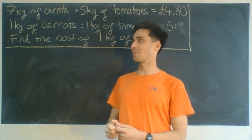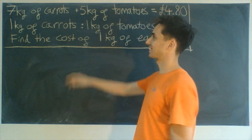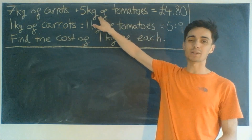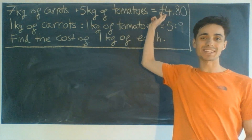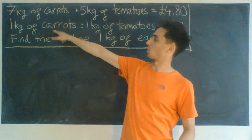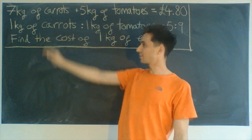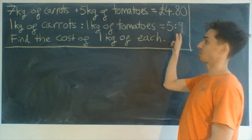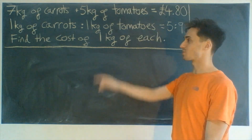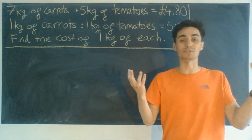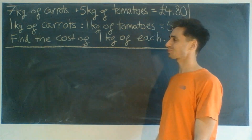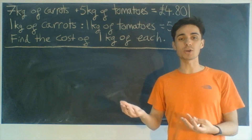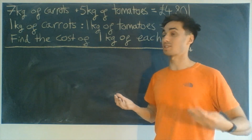This is a really awesome question. What we're asked is: 7 kilograms of carrots and 5 kilograms of tomatoes costs £4.80. The cost of 1 kilogram of carrots to 1 kilogram of tomatoes is in the ratio 5 to 9. What we need to do is find the cost of 1 kilogram of each. First things first, I'd like to do this question using ratio and then after that we'll do it using some algebra.